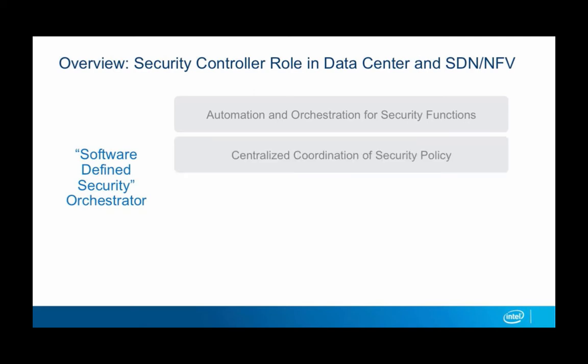The second is centralized coordination of the security policy. We're coordinating the policies as they apply to our infrastructure, but we're not really managing the policies themselves. The IPS manager is still going to define what a signature means, and a next-gen firewall is still going to define what the application control policies are. What we're doing is coordinating the policy as it applies to the workload dynamically as things change. The third is interacting with the virtual infrastructure — OpenStack and the SDN controller — making sure we're instantiating the security service in the right place based on the policy and intent, and also interacting with the SDN controller to bring the actual insertion, whether it's a simple security insertion, a bump in the wire, or advanced service function chaining.